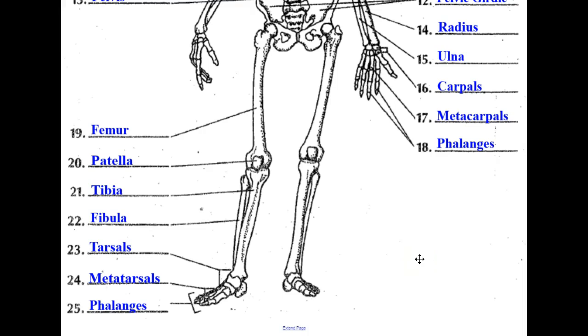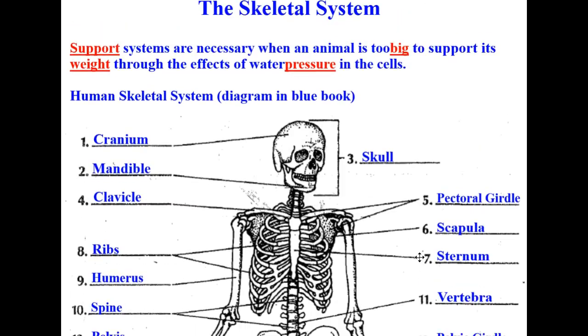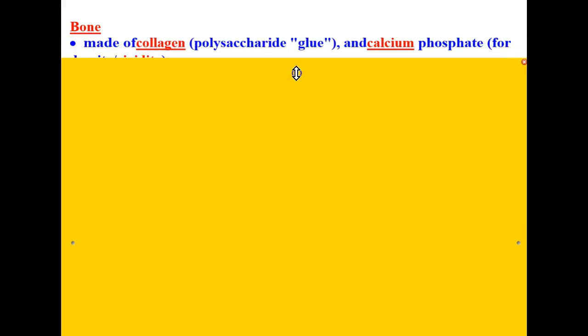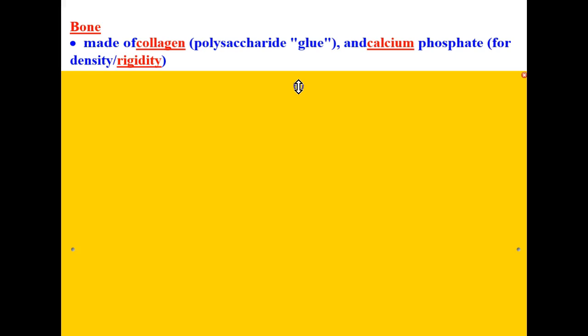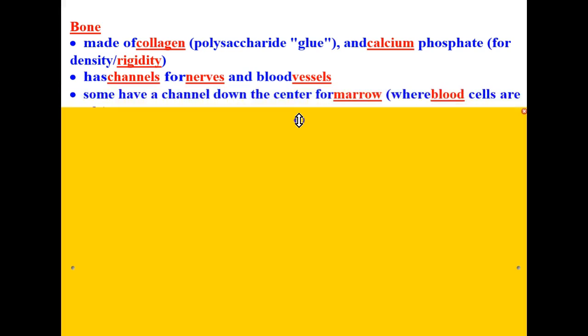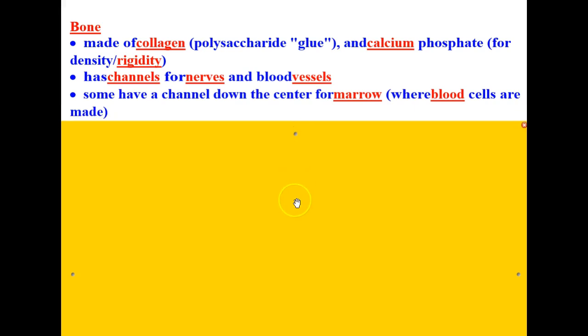That'll do it for the diagram. Now let's look at how bones are put together. Bone is made of collagen, which is a polysaccharide and acts as glue, and calcium phosphate, which functions for density and rigidity. Bone has channels for nerves and blood vessels, and some have a channel down the center for marrow — this is where blood cells are made.